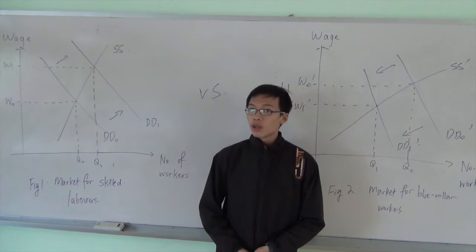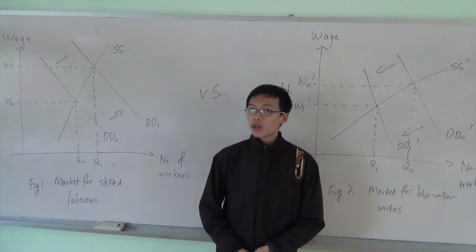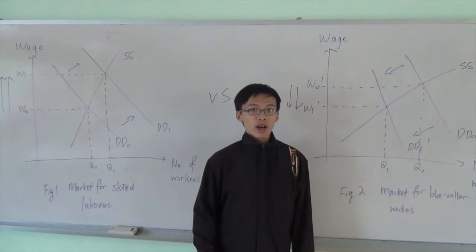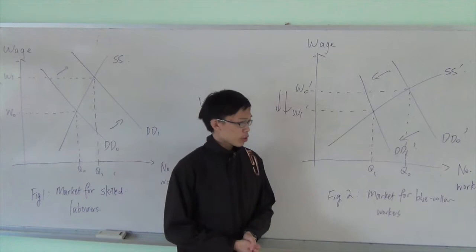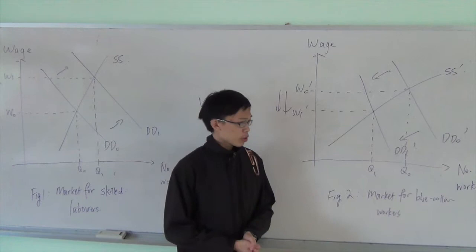As such, we are presented with a situation where the privileged and the rich become even richer with their increase in wages. However, the underprivileged and less educated become poorer due to their low levels of education, qualification and intelligence. As such, this is why income inequality is such a prevalent and rampant situation.